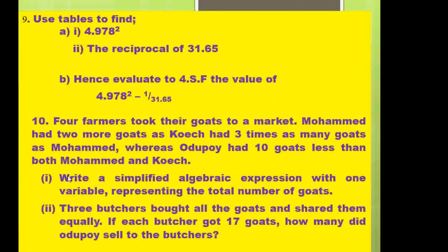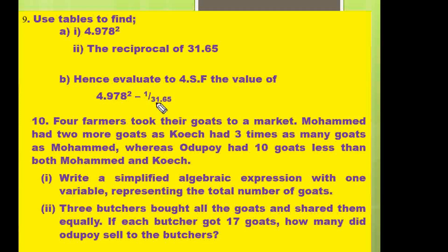Question number nine: use tables to find — part (i) 4.9782, part (ii) the reciprocal of 31.65. Part b: hence evaluate to four significant figures the value of 4.9782 squared minus one over 31.65.